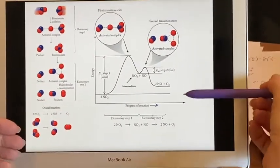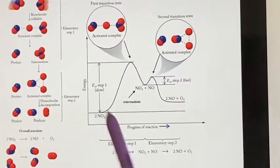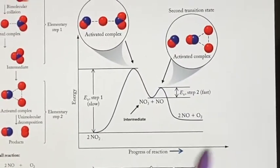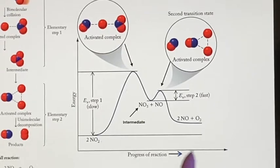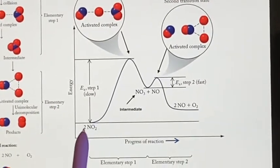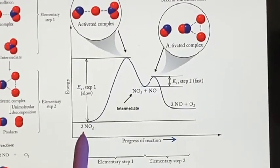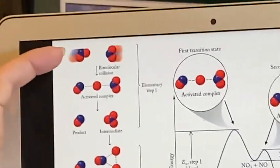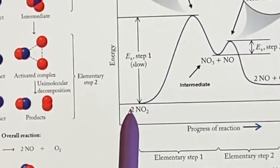This is how we would describe it using one of the energy diagrams. So as you can see, the x-axis is the progress of the reaction. If I'm at the very beginning of the reaction, all that I have are the two nitrogen dioxides. How does a step happen?